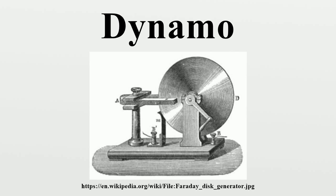Etymology: The word dynamo was originally another name for an electrical generator, and still has some regional usage as a replacement for the word generator. After the invention of the AC generator, the word dynamo became associated exclusively with the commutated direct current electric generator, while an AC electrical generator using slip rings or rotor magnets became known as an alternator. A small electrical generator built into the hub of a bicycle wheel to power lights is called a hub dynamo, although these are invariably AC devices.